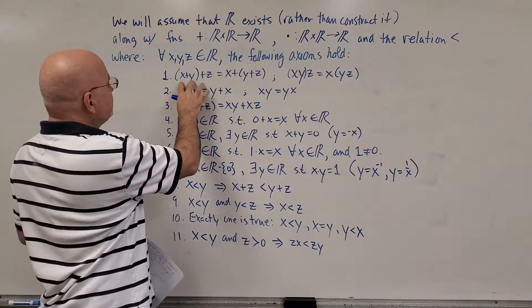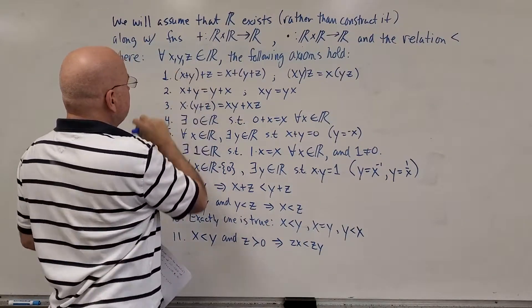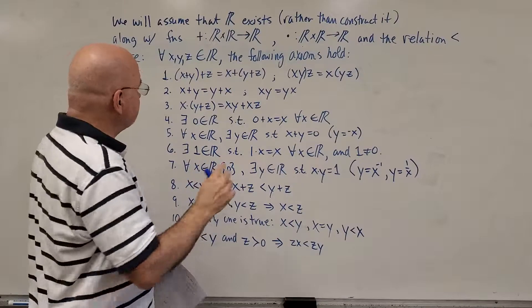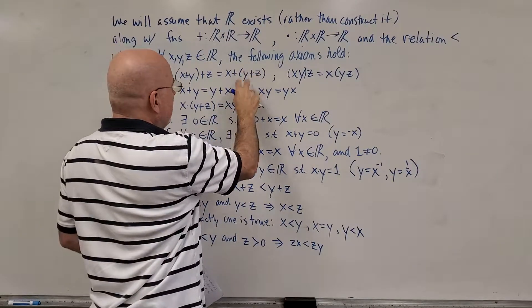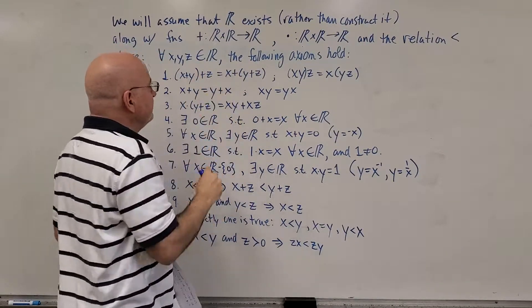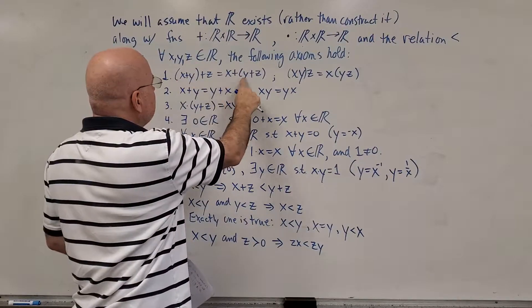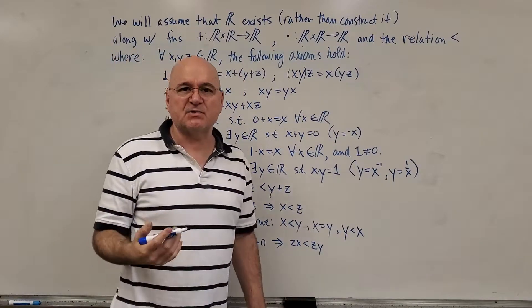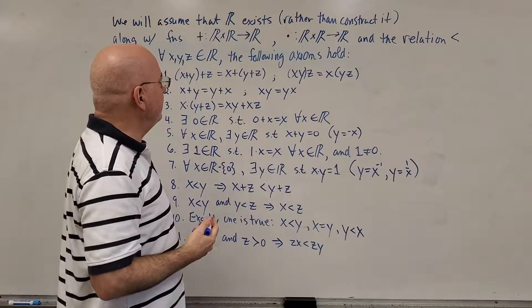The first one says that x plus y plus z, where you do the x plus y first, is the same as x plus y plus z. This is the one where you're doing the grouping. The numbers stay in the same order. The grouping is different. That's the associative property of addition.